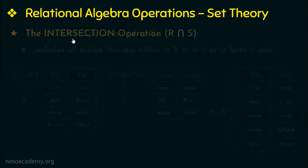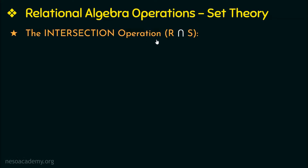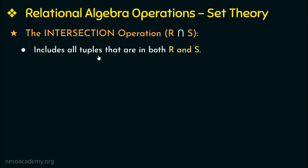Moving on to the next operation: the intersection operation, denoted as R intersection S. An intersection of two relations R and S gives a result that is a relation including all the tuples that are in both R and S — that is, tuples that are common to both relations.